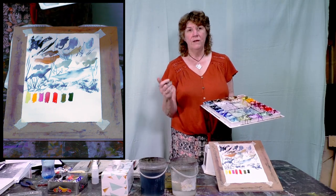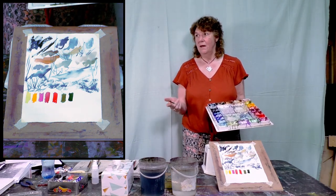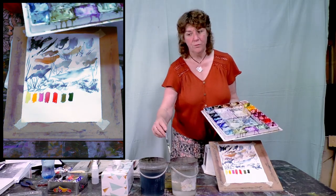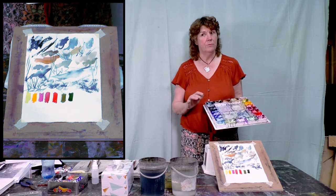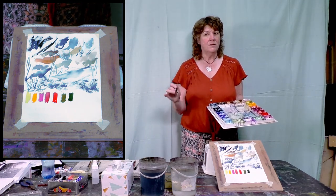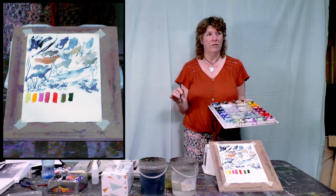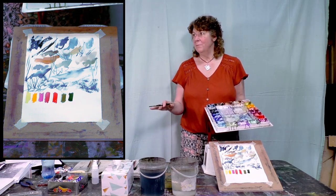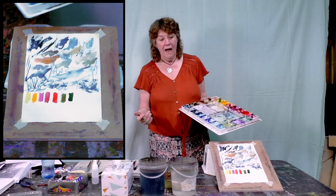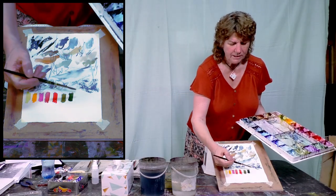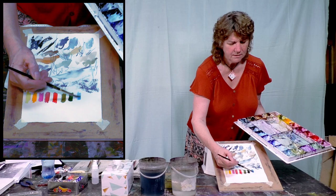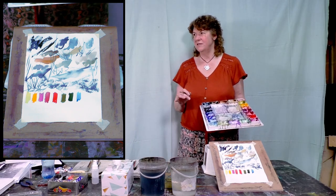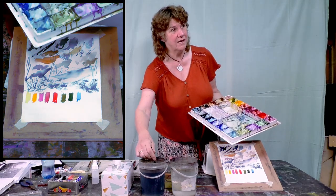Most of the colours I have worked with are Maimeri Blu and Daniel Smith — one comes from Italy and the second one comes from America. There are plenty of good brands out there, so I'm not particular if you've got different brands; that's fine. Just as long as they've got decent quality. Don't work with really basic student quality paints — they're really not worth the effort. If you've paid $20 for a set of 24 colours, you can pretty much guarantee that they're not going to be the best quality.